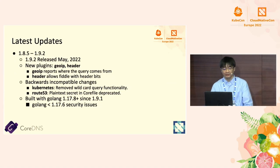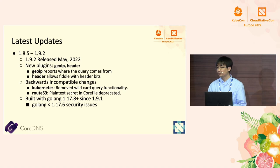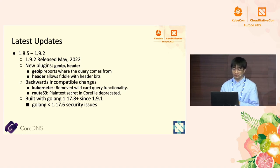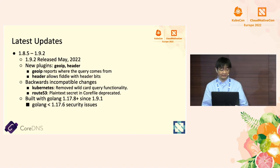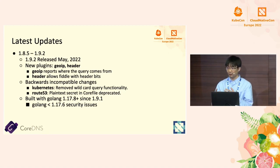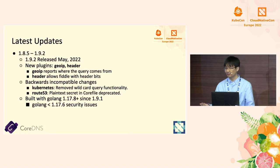Let's go through some recent updates since last year. Core DNS has released several versions from 1.8.5 to 1.9.2. The latest version, 1.9.2, was released just 10 days ago in May 2022. Over the past half year, two plugins have been added: the GLIP plugin, which allows you to report where a query comes from, and the header plugin, which allows you to modify header bits of your DNS query message.